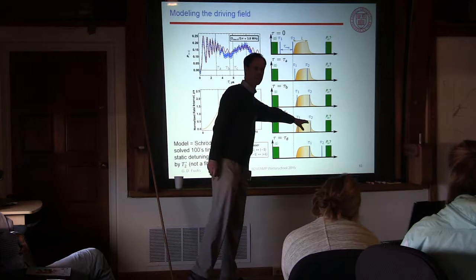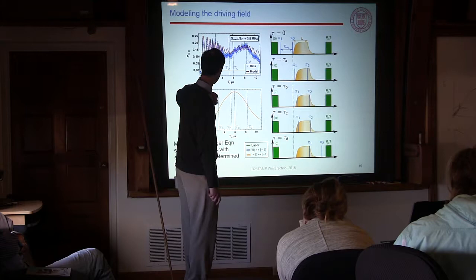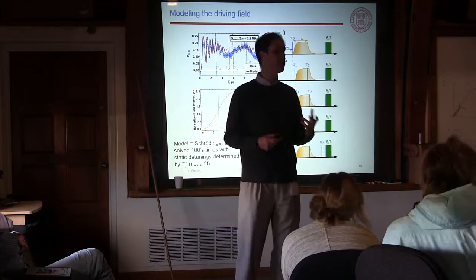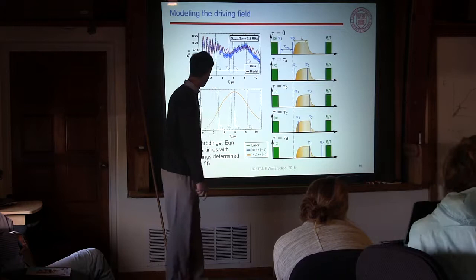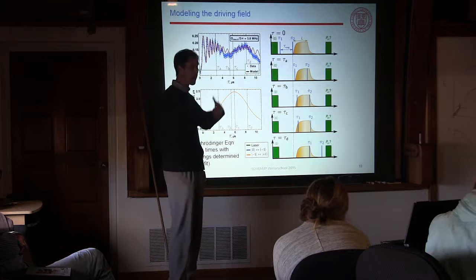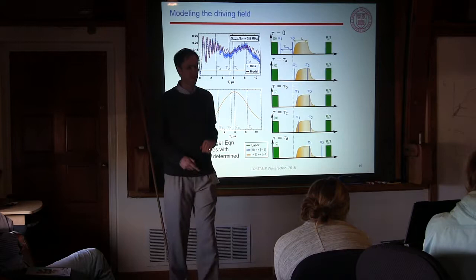The solution is to use a long fixed mechanical pulse — about 3 microseconds — which rings up, stays on, then rings down, and sweep two fast magnetic pi pulses (each about 30 ns) through this region to control the interaction time. The spin sees an effective pulse area that increases then decreases. In the linear region we see nice coherent oscillations that damp due to inhomogeneous broadening. The red curve is not a fit — it's a numerical solution of the Schrödinger equation with static detunings drawn from a Gaussian distribution corresponding to T2-star, and it matches the data very well.